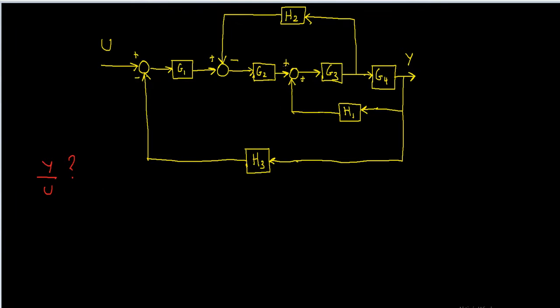The easiest way is just to label every node in this block diagram, and then write the equations for each node.